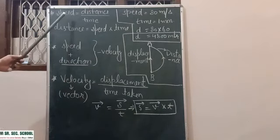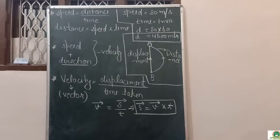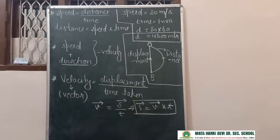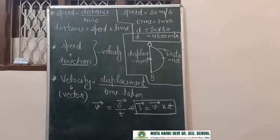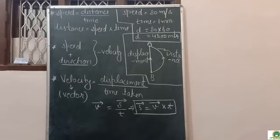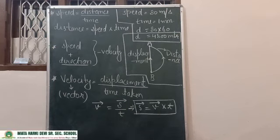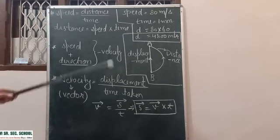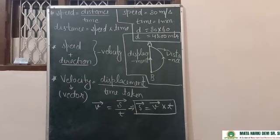Speed is a scalar quantity. What is a scalar quantity? Scalar quantities are those which require only magnitude to describe them fully. For example, 2 kg of sugar — the number 2 gives full information, so mass is a scalar quantity. Similarly, speed is a scalar quantity. Let us understand this with the help of an example.